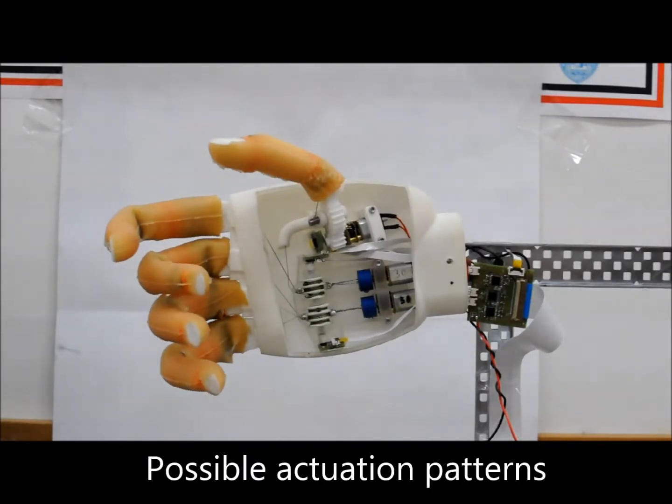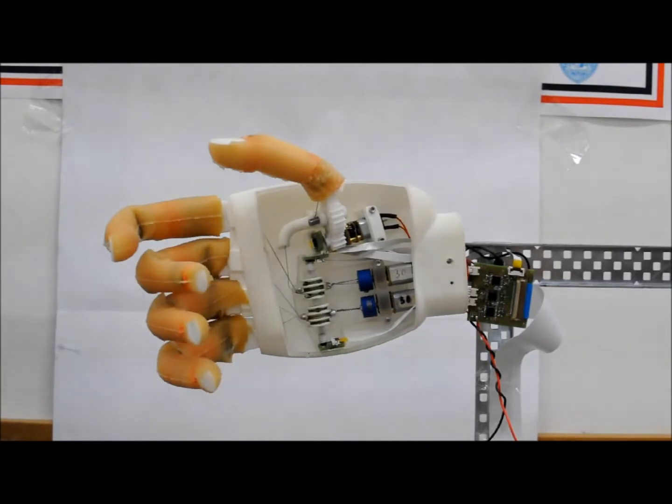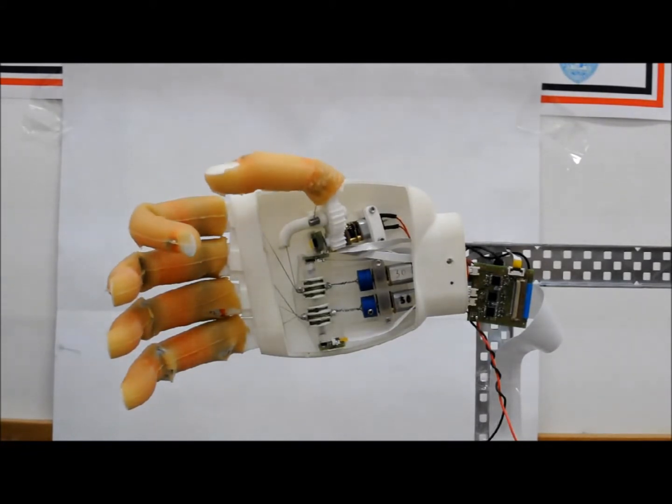The UC Soft Hand is composed of soft fingers, two twisted string actuators, and a third actuator for rotating the thumb. It is the lightest prosthetic hand prototype with three actuators that have been developed in the world so far.